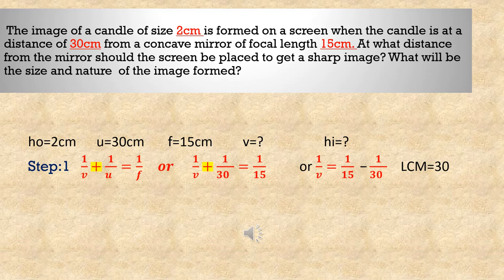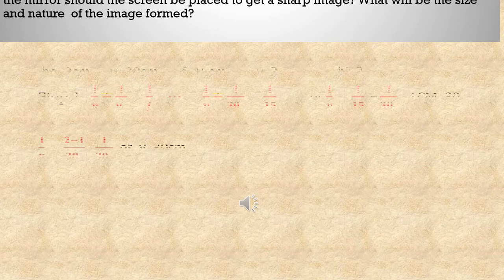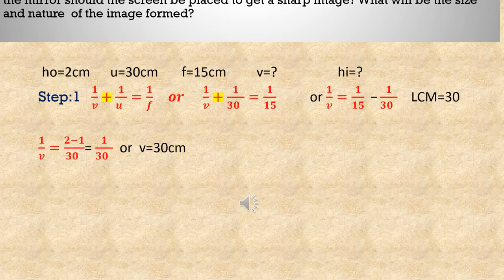Substituting the values: 1/V + 1/30 = 1/15. So 1/V = 1/15 − 1/30. Taking LCM = 30, we get V = 30 cm. That means the distance of the image from the mirror is 30 cm.